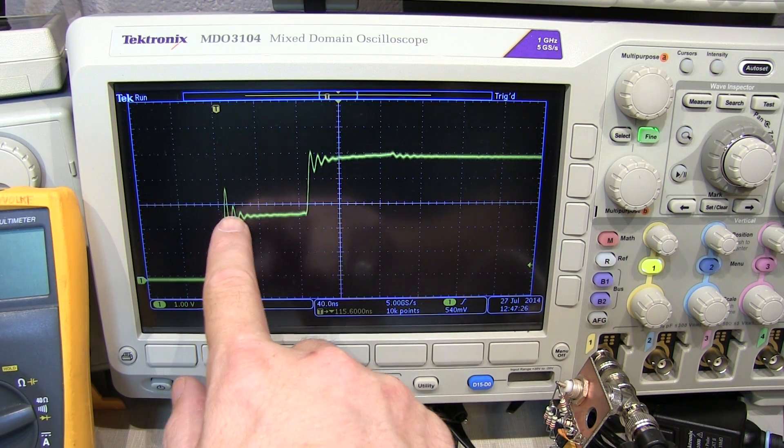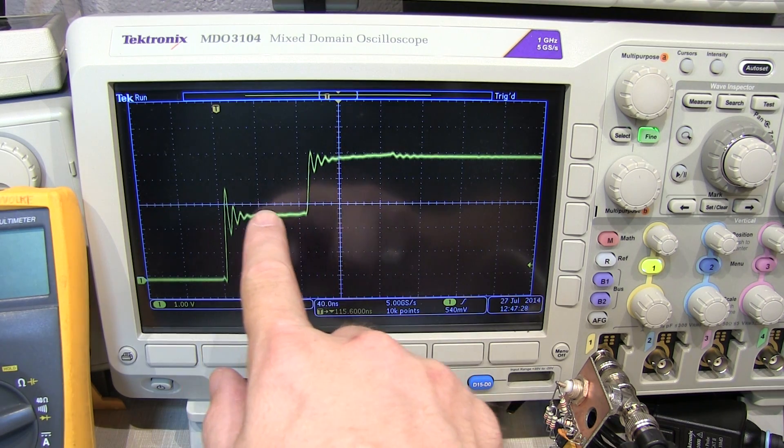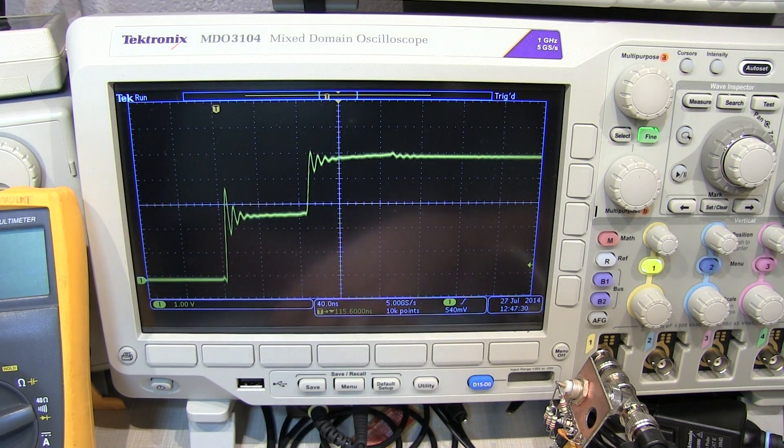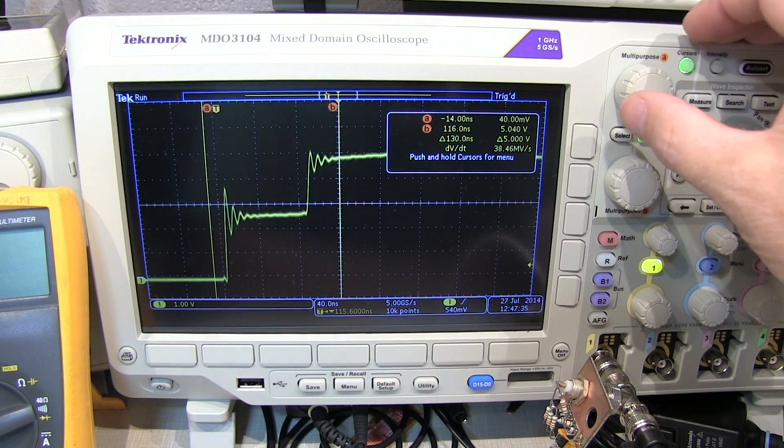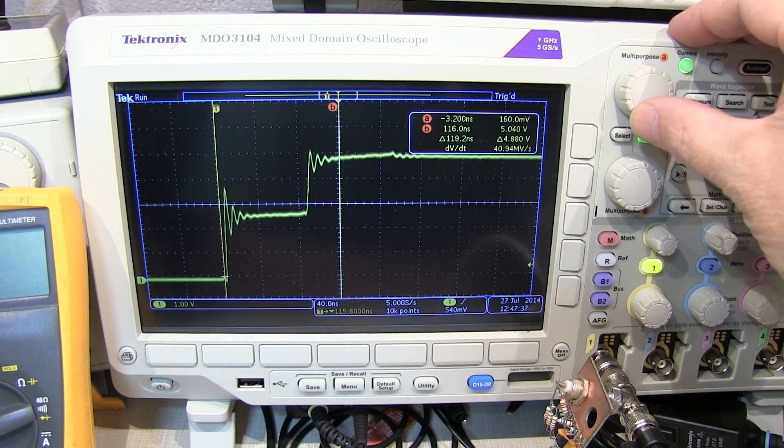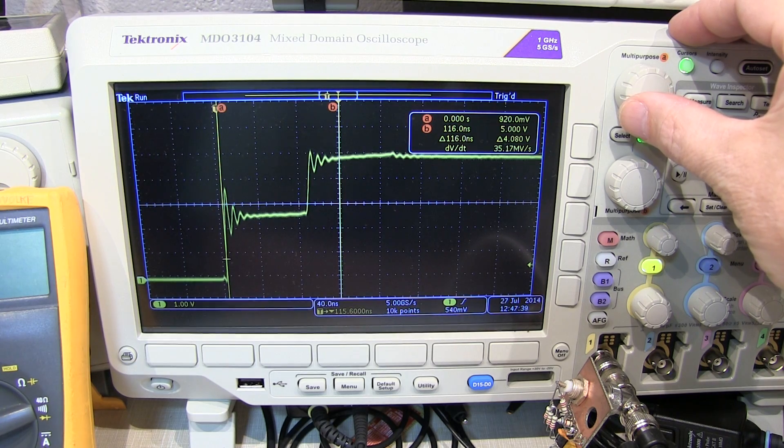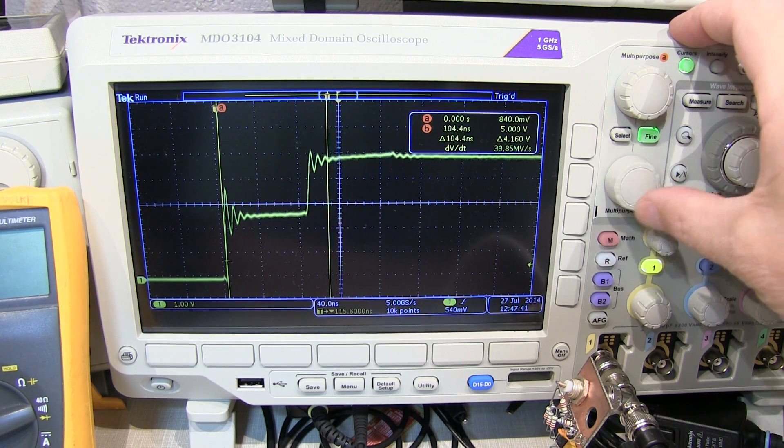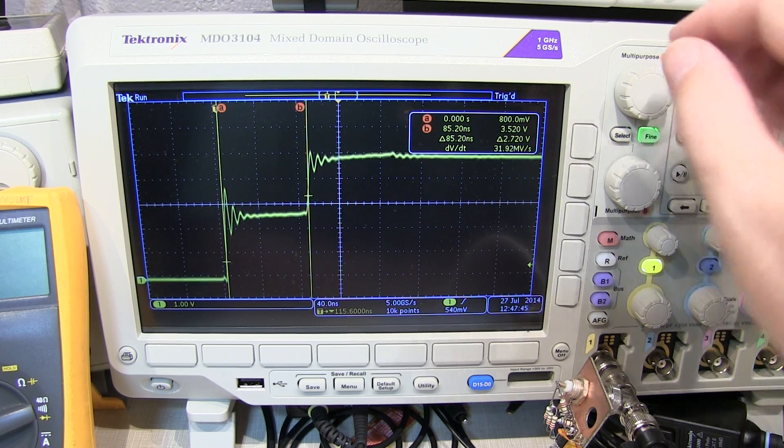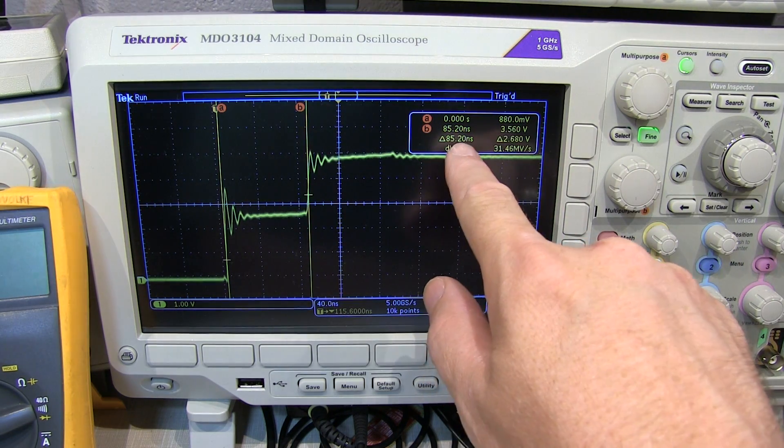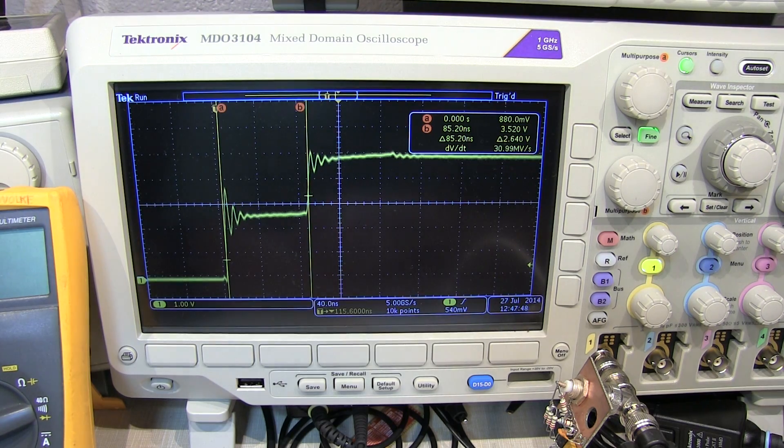So the delay here, this pedestal, is equal to the round-trip delay through the coax. And we can easily measure that by throwing a couple of cursors on here. I'm going to position those at about the same point of the incident edge and then about the same point on the reflected edge there. And we can measure the delay there, is about 85.2 nanoseconds. So that's our round-trip delay.